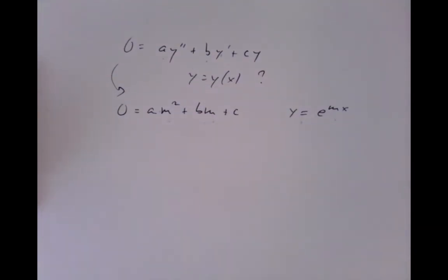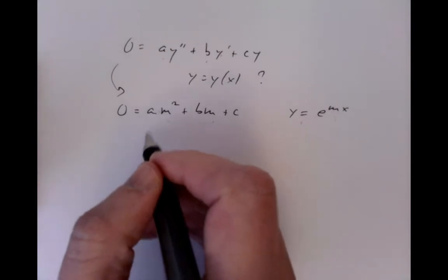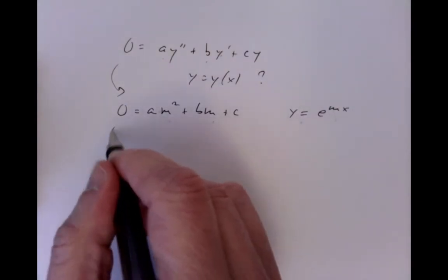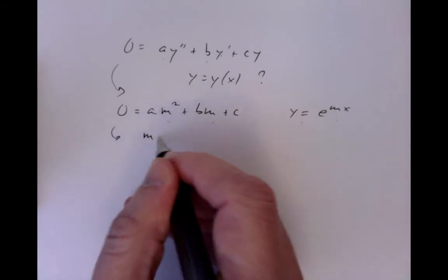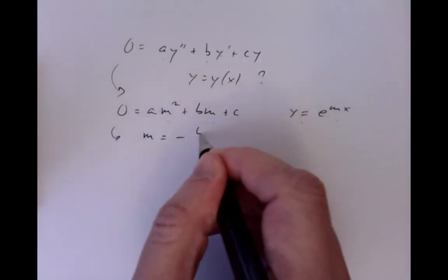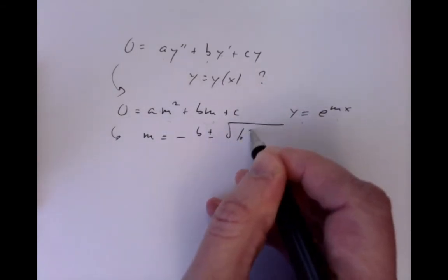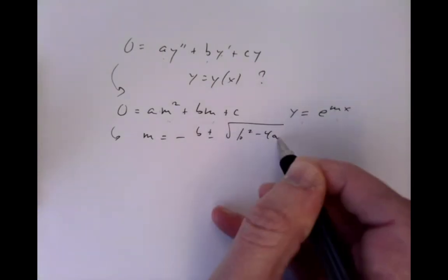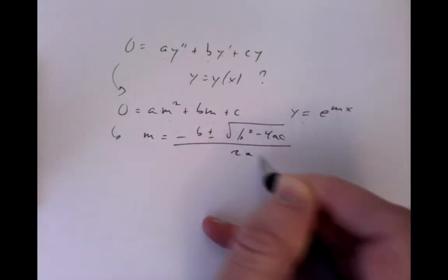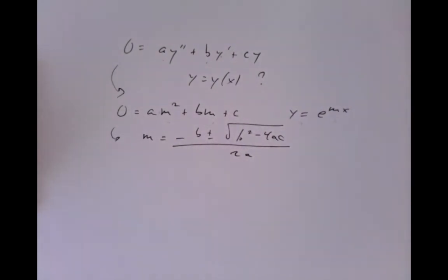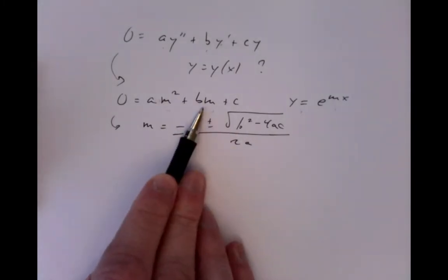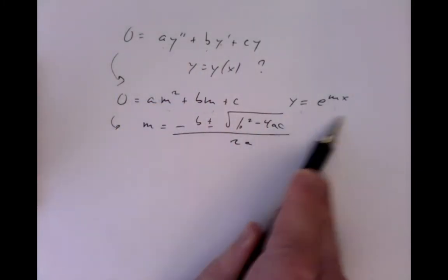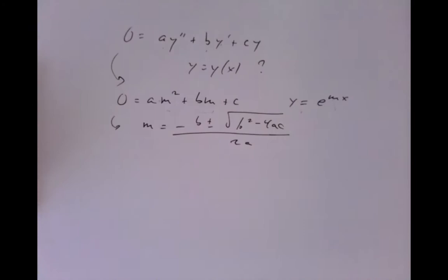We previously studied the case of positive discriminant. We know this equation is the same as saying that M is negative B plus or minus the square root of B squared minus 4AC, all over 2A — the usual quadratic formula. From the quadratic formula, I can solve for the M's and plug them back in to get two solutions in general if there are two different roots.